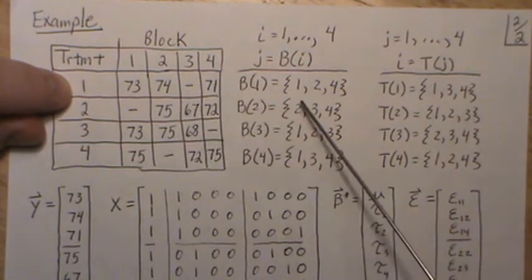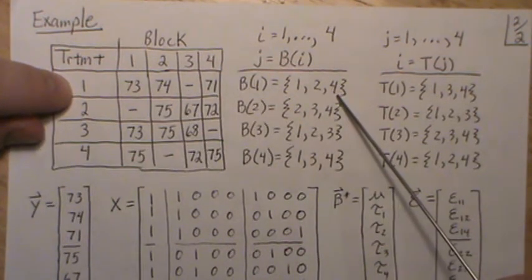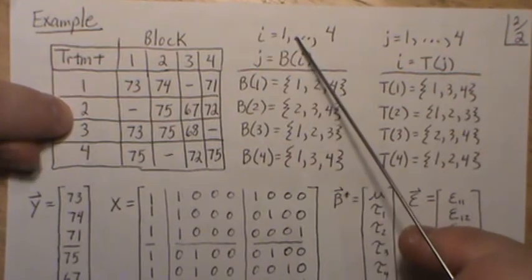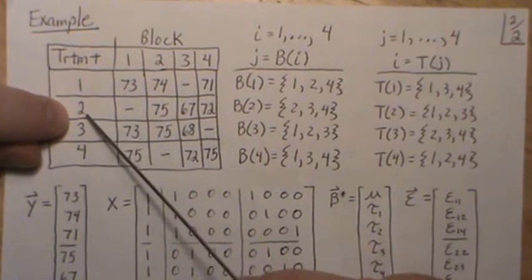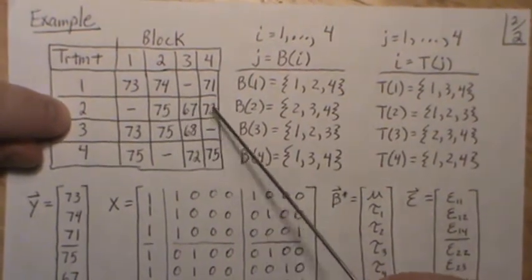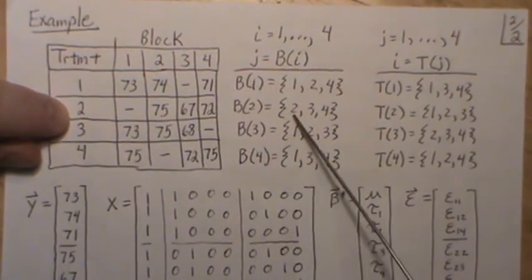We go to i equals two, then j equals B(2). Treatment two occurs in blocks two, three, and four, so B(2) is two, three, and four, and similarly for B(3) and B(4).